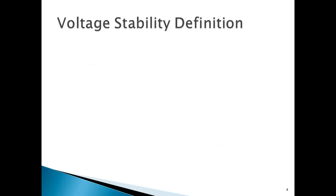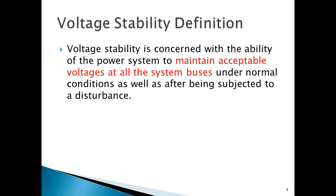Now let me discuss how voltage stability is defined. As you see here, it deals with the capability of a power system to maintain allowable voltage levels at all nodes or buses under normal and post-disturbance operations. The allowable voltage level is plus or minus 5% of nominal voltage, i.e., 1 per unit. Therefore, the range of acceptable or prescribed voltage limits is 0.95 per unit to 1.05 per unit. If the voltage is less than 0.95 per unit, it is termed as low voltage; if it is greater than 1.05 per unit, it is termed as over voltage. Voltage stability deals with ensuring that voltage magnitudes of all buses are within the prescribed limits; if not, the power system is voltage unstable.